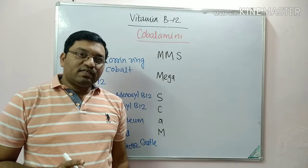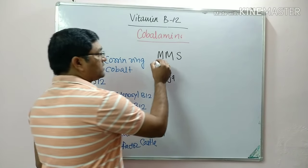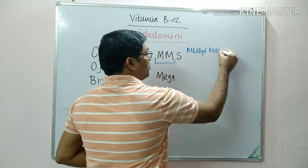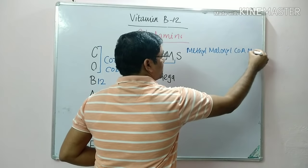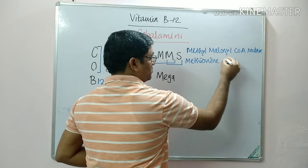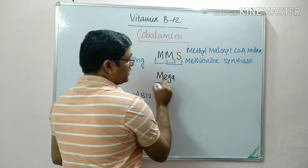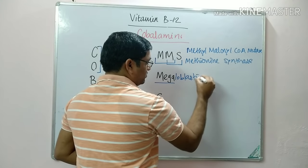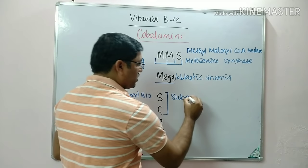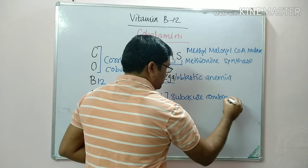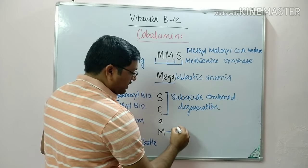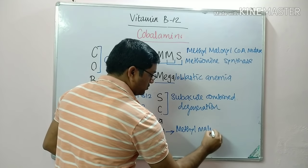Vitamin B12 catalyzes three reactions, of which two are very important. The first is methylmalonyl-CoA mutase (methylmalonyl coenzyme A mutase), and the second is methionine synthase. Deficiency leads to megaloblastic anemia, subacute combined degeneration of the spinal cord, and excretion of methylmalonyl in the urine.